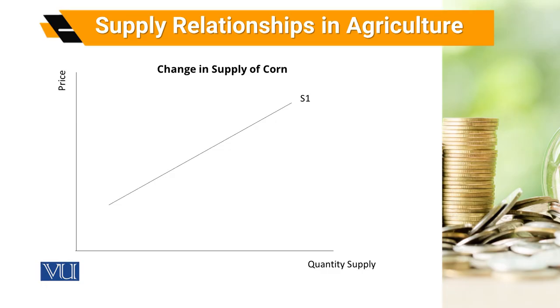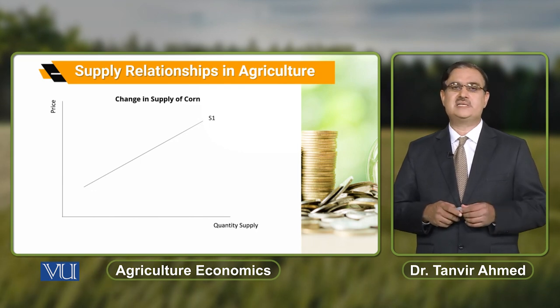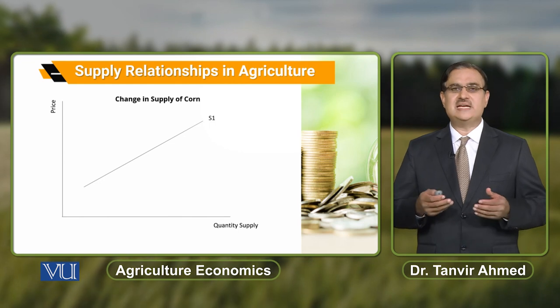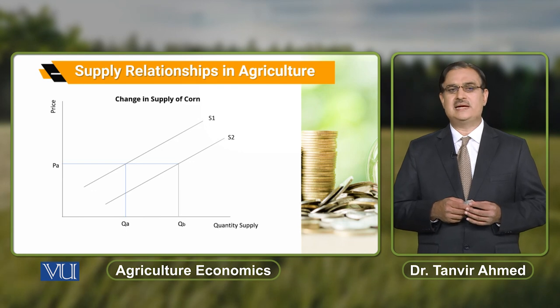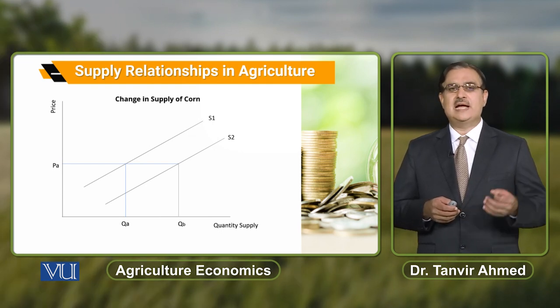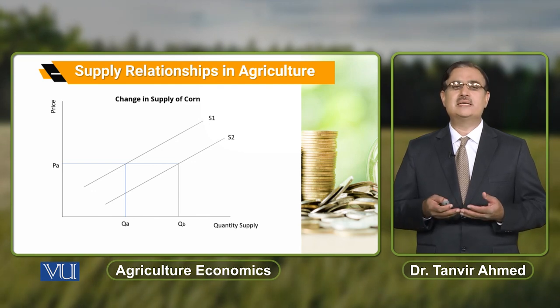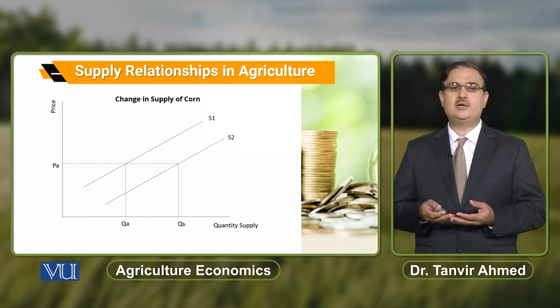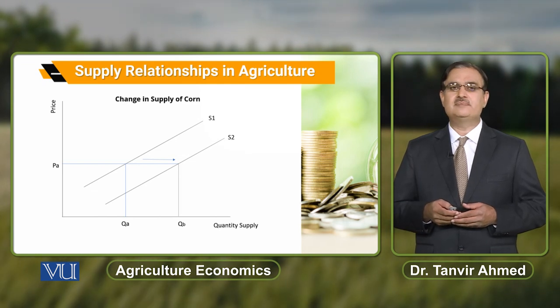To understand change in supply, we again draw a supply curve by taking quantity of corn on the horizontal axis and price on the vertical axis. This positively sloped curve indicates quantity supplied of corn against different prices. If, because of a change in factors other than price of corn, the supply curve shifts from S1 to S2, we say there is an increase in supply — but this change in supply is because of factors other than price. Initially at price PA, the producer is willing to produce QA quantity of corn, but under new market conditions, the producer is willing to produce QB quantity of corn although there is no change in price. This movement from S1 to S2 indicates an increase in supply of corn.